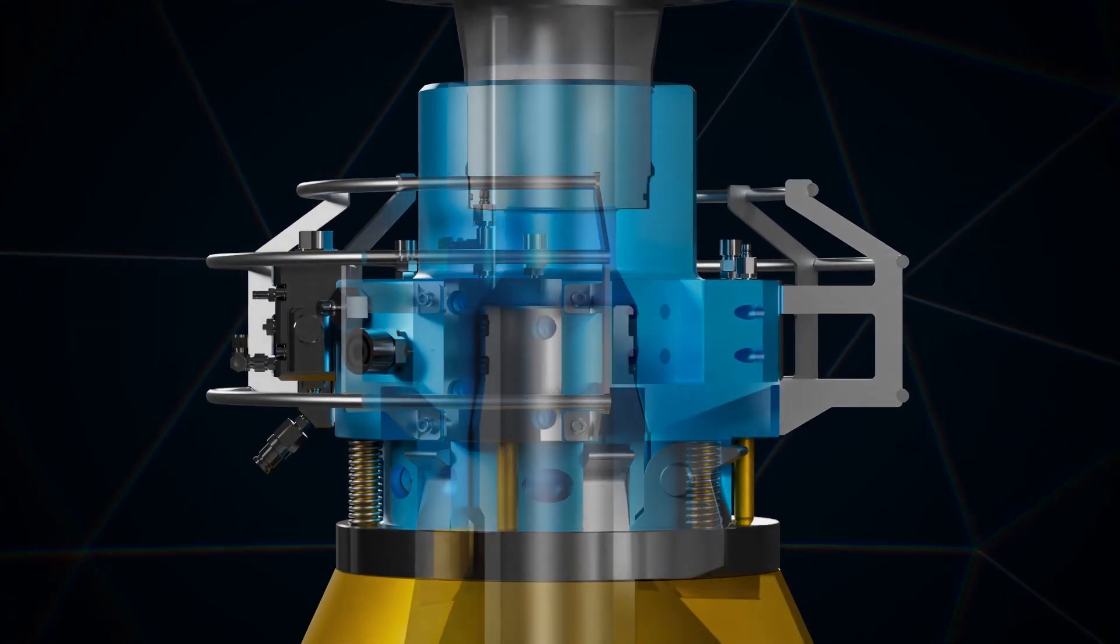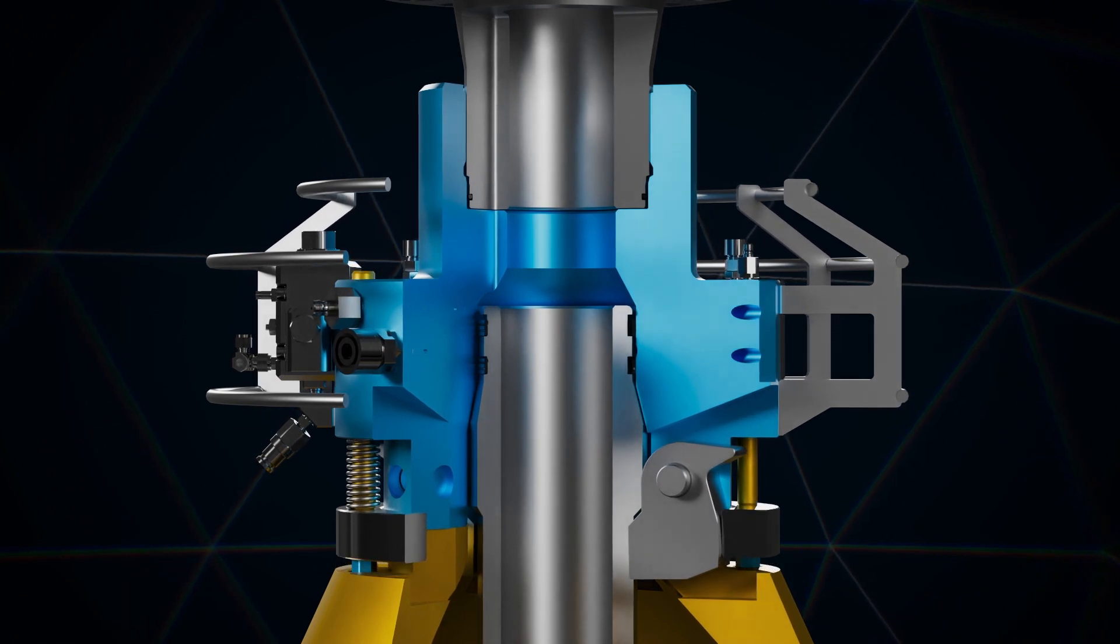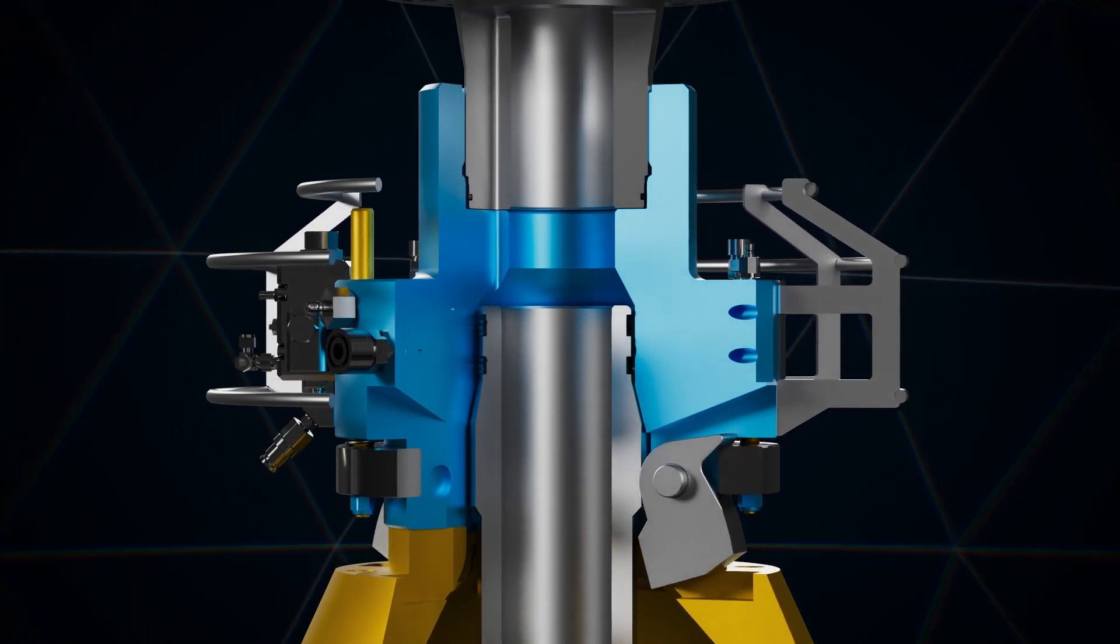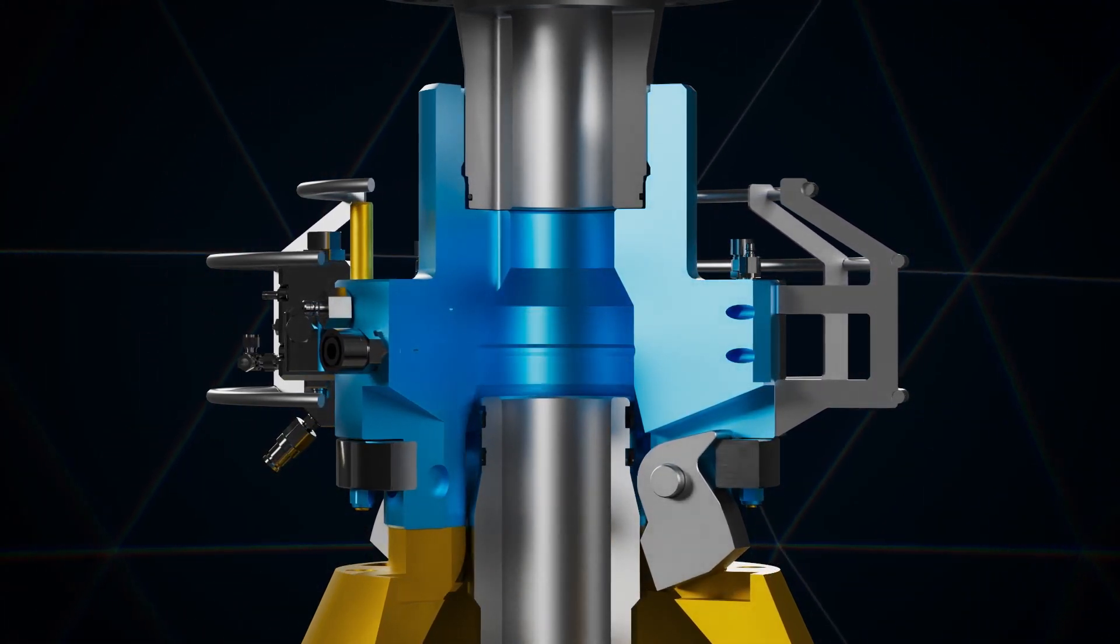The Failsafe design features three hydraulic cylinders that remotely actuate the lock ring, securing the Easy Latch connection and locking it in position.